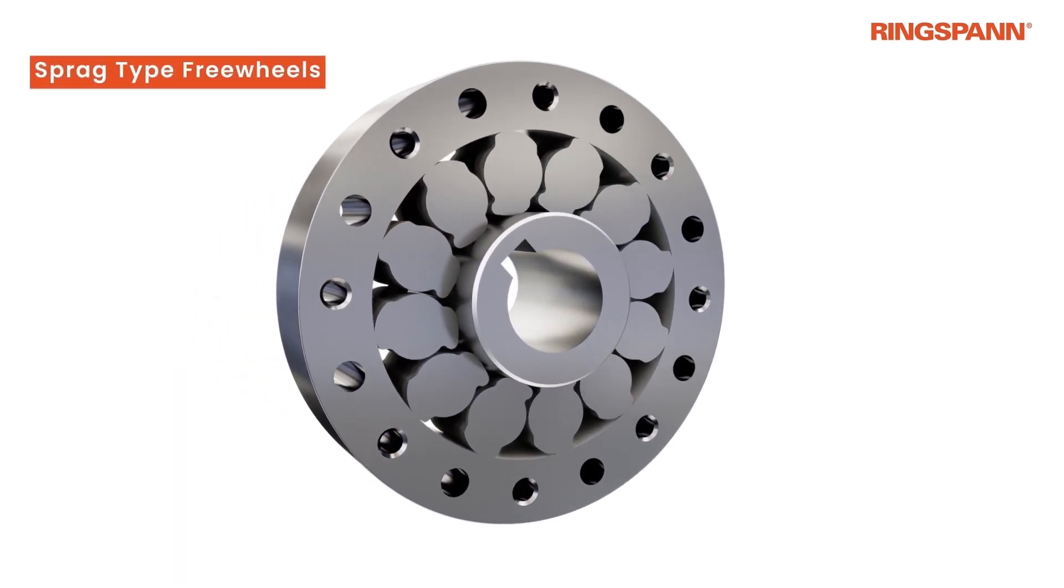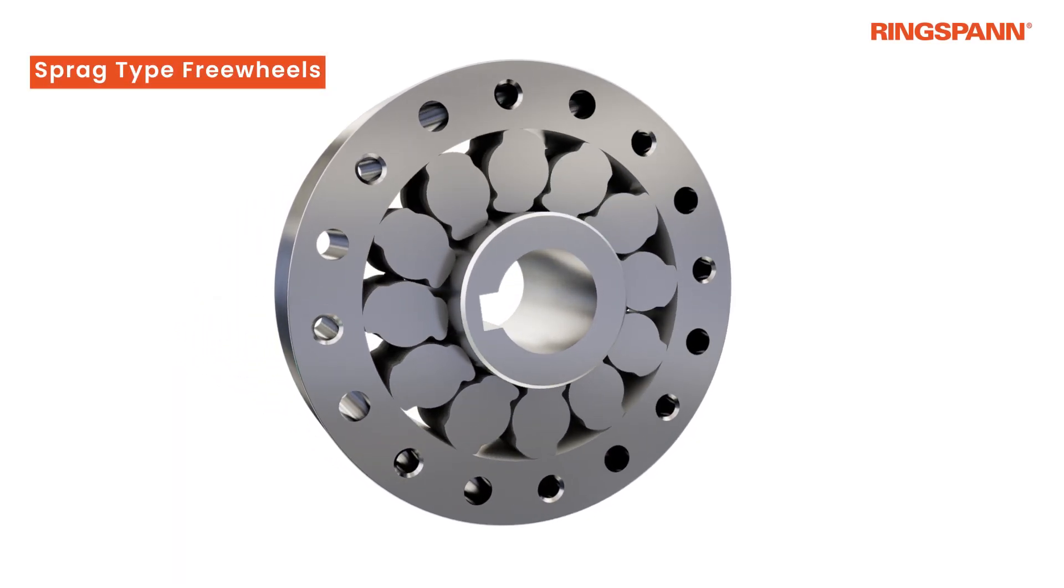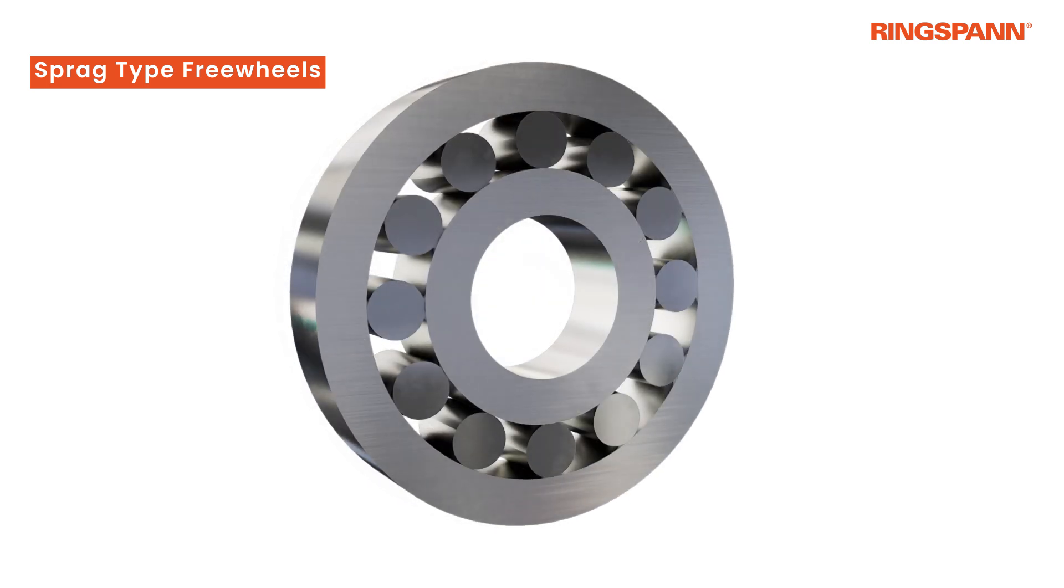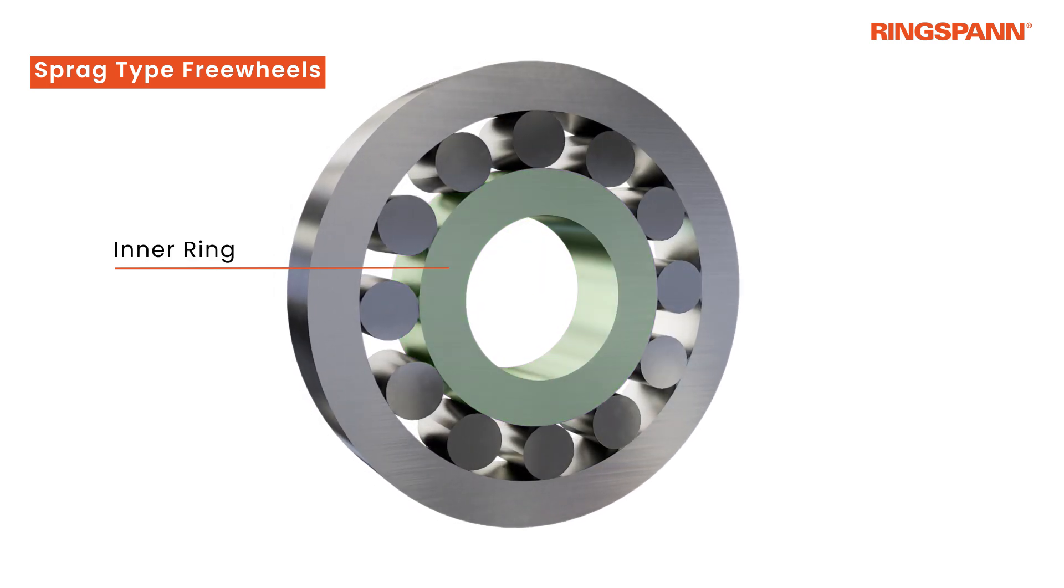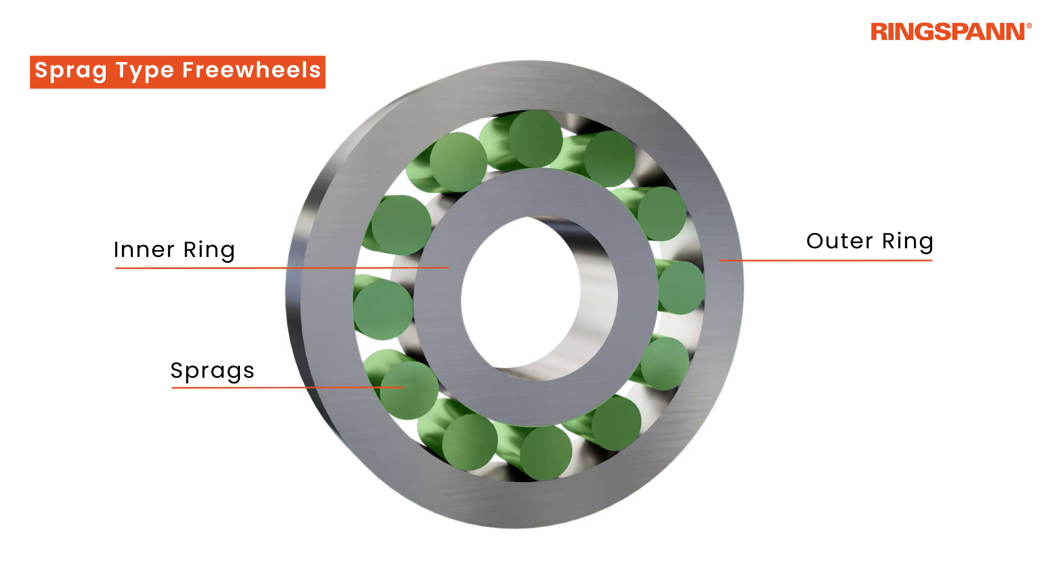Let's start with the Sprague-type freewheels. Sprague-type freewheels consist of an inner ring, an outer ring, and the Spragues in between.